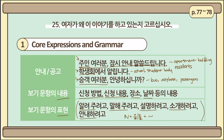So if the options include sentences such as 신청 날짜를 알려주려고 and 신청 방법을 설명하려고, just focus on the words 신청 날짜 and 신청 방법. If the passage was about the application date, choose the first one as the answer. And if it was about the application method, then choose the second.